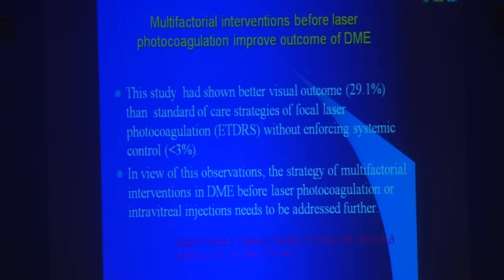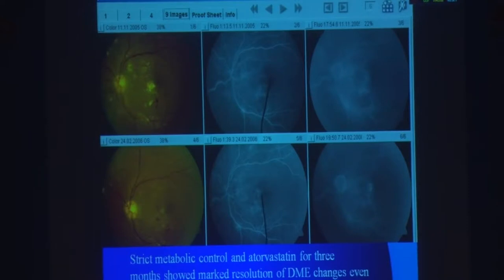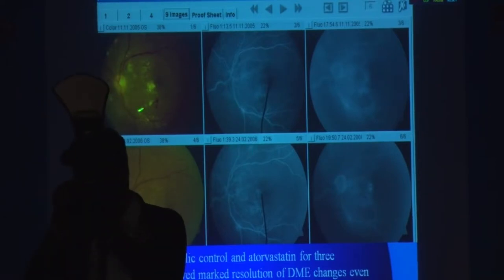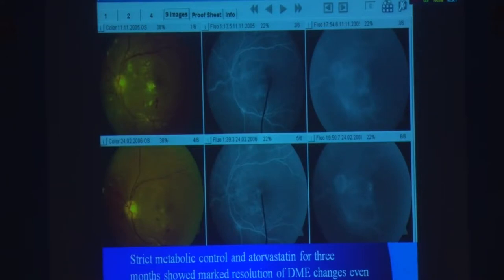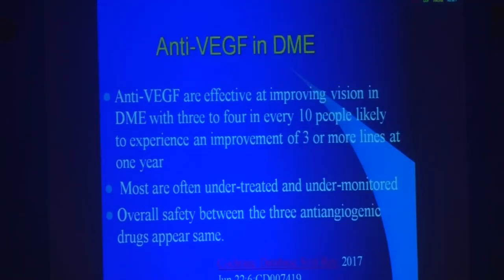Just with strict metabolic control in 3 months — this is way back in 2006 — the hard exudate melted away, edema came down, and we had not done any laser. Then anti-VEGF: the Cochrane review 2007-2017 shows anti-VEGFs are effective in improving vision in DME in 3 to 4 in every 10 patients — something like 3 or more lines improvement. Most are often undertreated and undermonitored, which doesn't happen often with AMD. The overall safety between the three anti-angiogenic drugs appears similar.